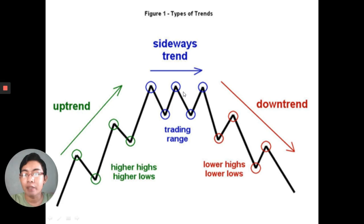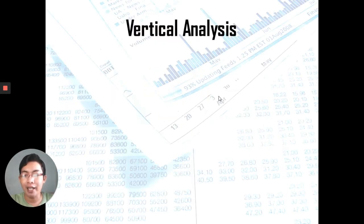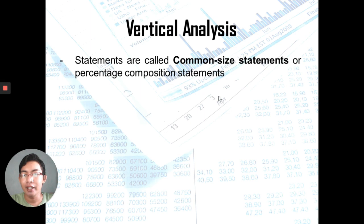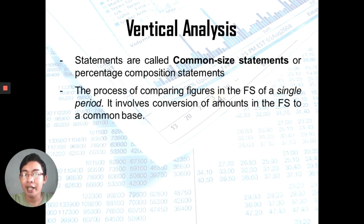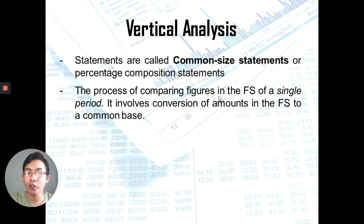Now let's go to Vertical Analysis. These are also called Common Size Statements or Percentage Composition Statements. In Vertical Analysis, we compare figures in the financial statements of a single period. It involves the conversion of amounts in the financial statement to a common base — from amounts, we convert them into percentages. You only use figures from the same period, not from other periods.